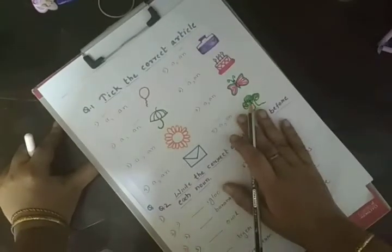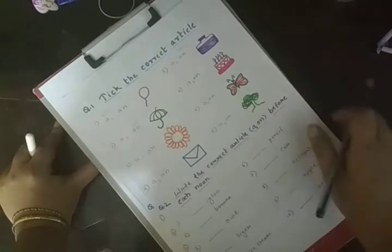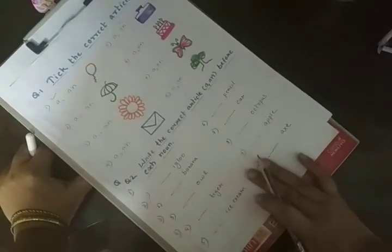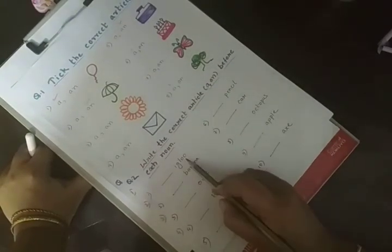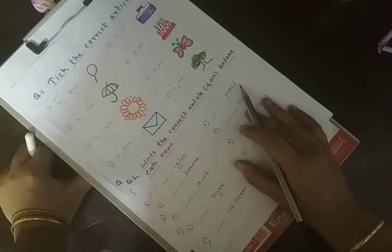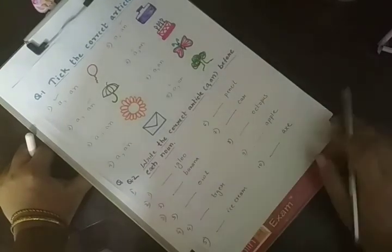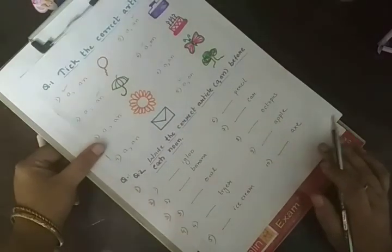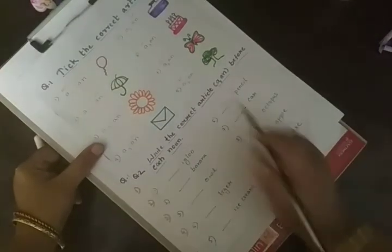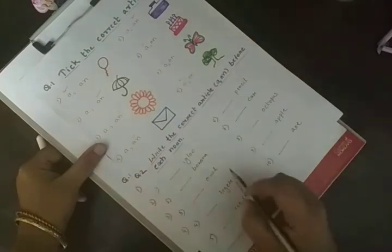So this is one of the most easy question. This question is very easy. Easily you can give it to UKG children. Next is write the correct article, A, an, before each noun. You have to write A or AN.